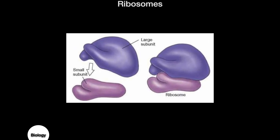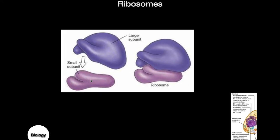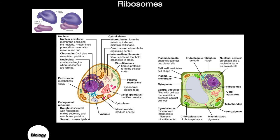Now looking at the next organelle — ribosomes. Ribosomes are made up of two smaller units: a large subunit and a small subunit. If you remember from our organic molecules lecture, ribosomes are important in protein production. You can see that ribosomes are small and they can be free-floating.